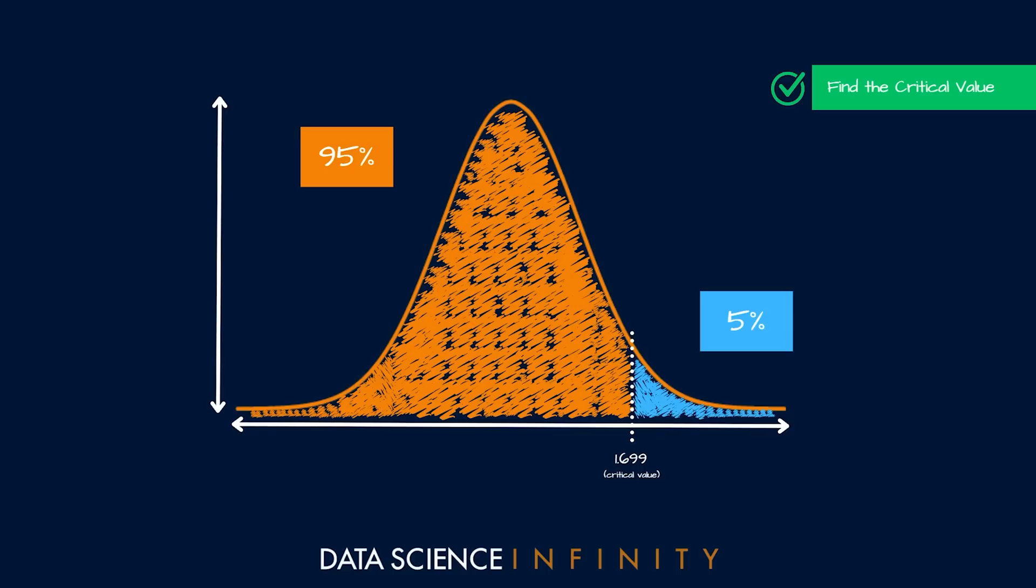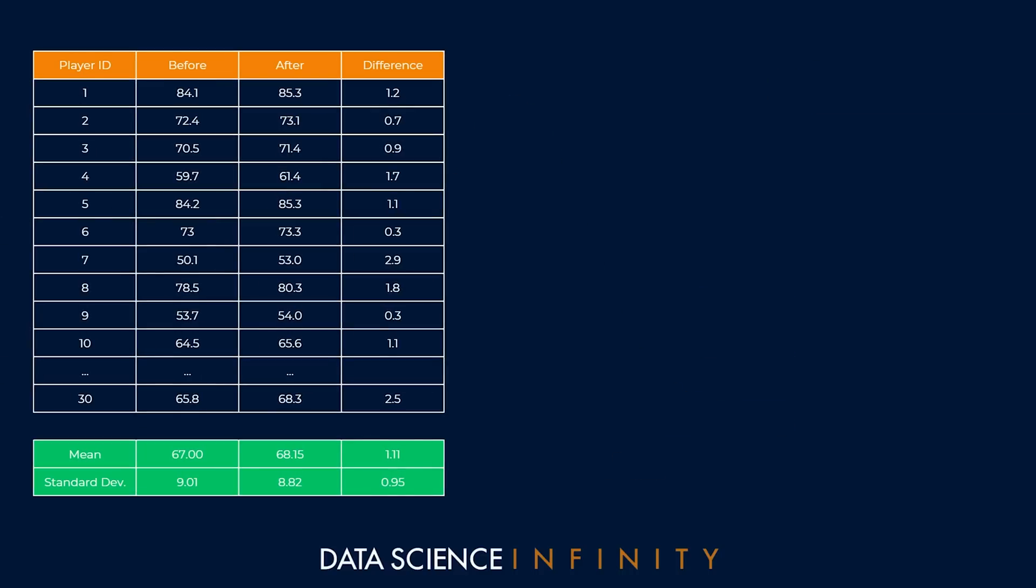Step two is to calculate the t-statistic for our test. Before we look at the formula for this calculation, let's take a look at our data. For a paired t-test we need to know the individual results for each of our players before and after the training program, and you can see this on screen in our table. The first column is the player ID, and then we have columns showing each player's best vertical leap measurement before the training program, their best leap after the program, and the difference between the two.